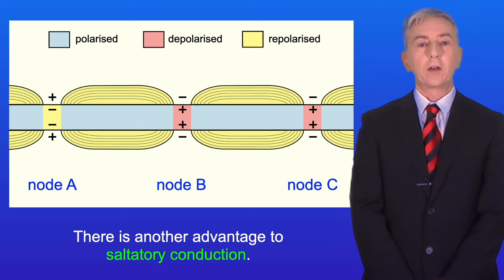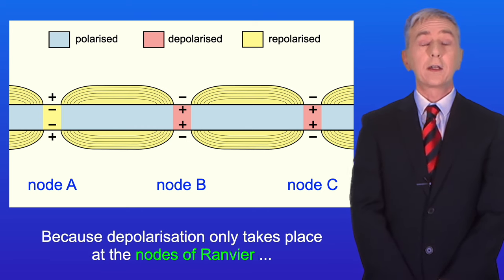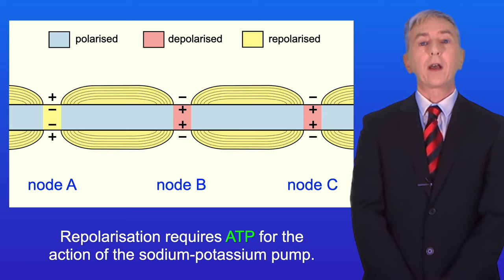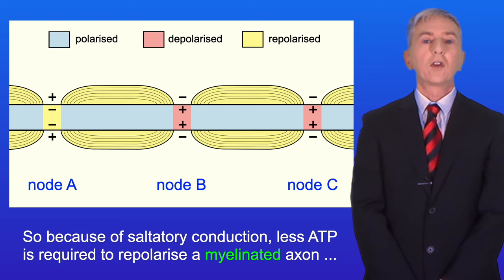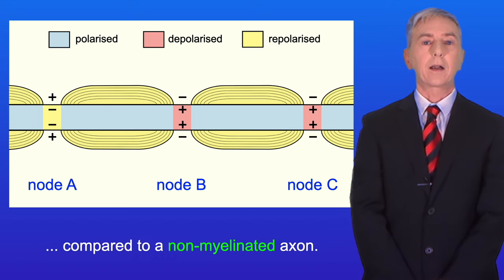Now there is another advantage to saltatory conduction. Because depolarization only takes place at the nodes of Ranvier, that means that only these regions need to be repolarized. Repolarization requires ATP for the action of the sodium potassium pump. So because of saltatory conduction, less ATP is required to repolarize a myelinated axon compared to a non-myelinated axon.